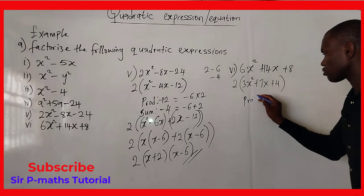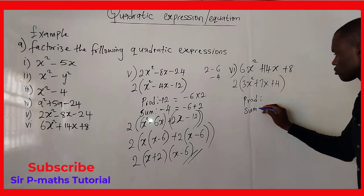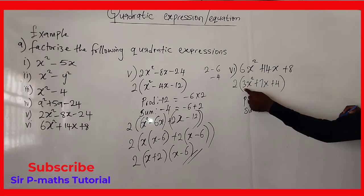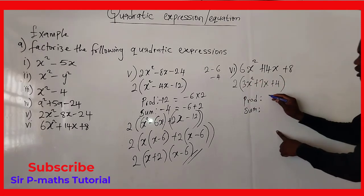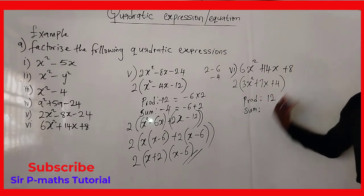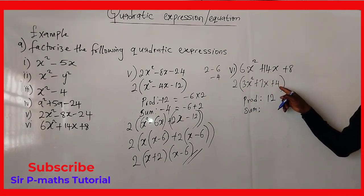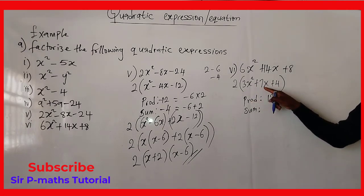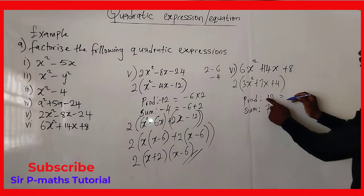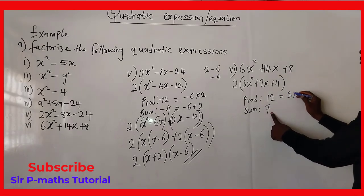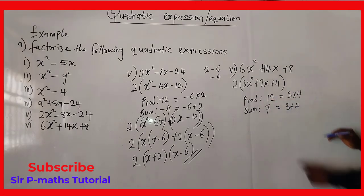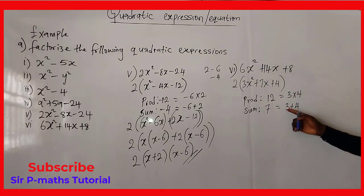To get the product, since the x² term has a coefficient of 3, we multiply that coefficient by the constant 4: product = 3 × 4 = 12. The sum is the coefficient of x, which is 7. We look for two factors of 12 that multiply to 12 and add to 7 — that is 3 and 4.